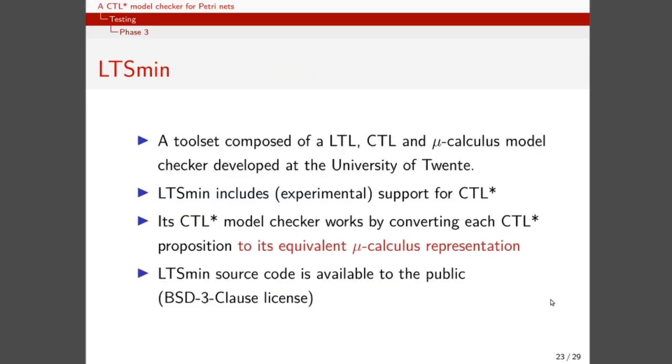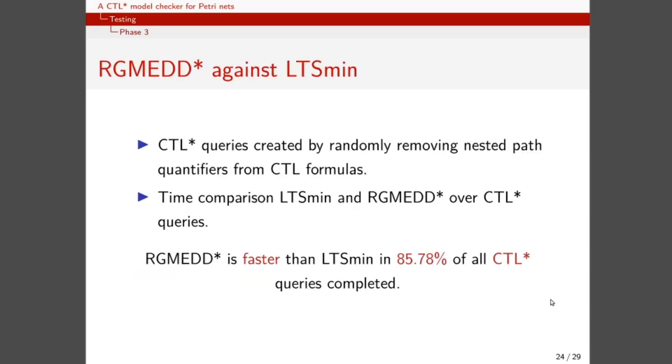We are now ready to describe the third phase of our testing procedure, which involves an external tool. LTSmin supports CTL-STAR model checking through its conversion to mu-calculus, and then applies the standard mu-calculus iteration to find the set of states satisfying the given CTL-STAR proposition. LTSmin is an open source tool, which is developed by the University of Twente. To compare LTSmin with RGMED-STAR, we first had to validate LTSmin on the queries of the model checking contest, and we did so by performing the same validation procedure we did in phase 1 of our testing.